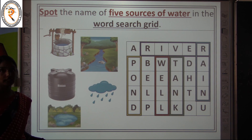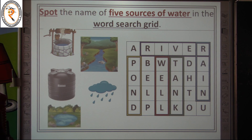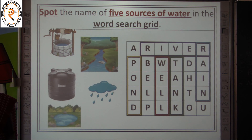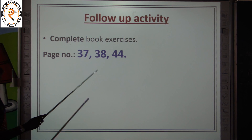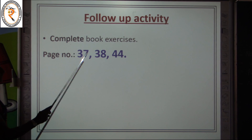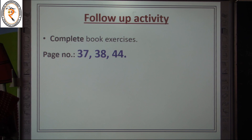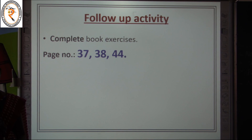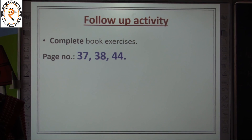That's all, children. Today we learned Lesson 8 about air and Lesson 9 about water. Please follow some simple ways to avoid air pollution and to save water. Complete your book exercise — pages 37, 38, and 44. Take care of your health and be safe at home. Thank you.